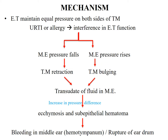With negative middle ear pressure, a transudate of fluid forms in the middle ear. As the pressure difference increases, there will be ecchymosis and sub-epithelial hematoma in the mucous membrane of the middle ear and the tympanic membrane. A very large pressure difference may lead to bleeding in the middle ear called hemotympanum, rupture of the eardrum, or development of a perilymph fistula through the oval or round window.